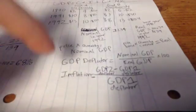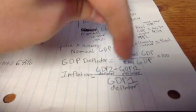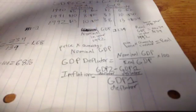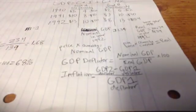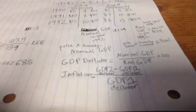Inflation is the GDP deflator in year 2 minus the GDP deflator in year 1, over the GDP deflator in year 1. So let's say that you're wanting to calculate the inflation rate from 1991 to 1992.